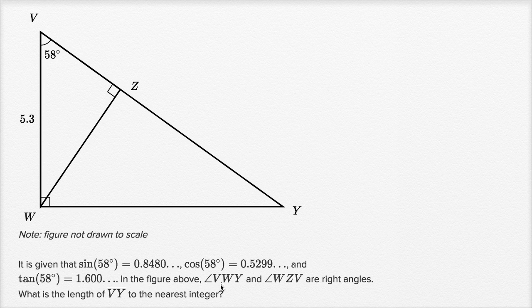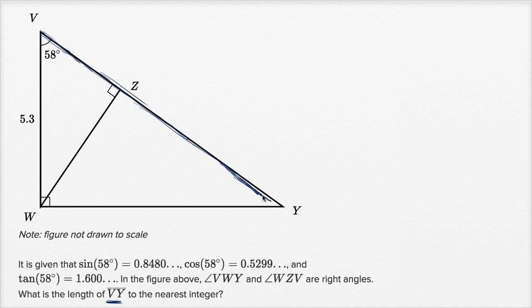In the figure above, angle VWY and angle WZV are right angles. They've already labeled them as right angles. What is the length of segment VY to the nearest integer? So VY is the hypotenuse of this big triangle right over here. And what else do we know about that big triangle?